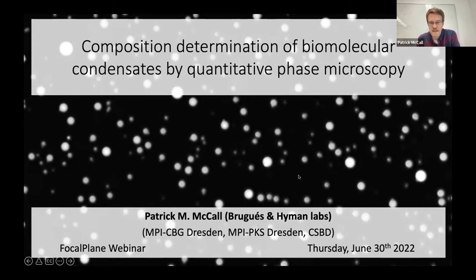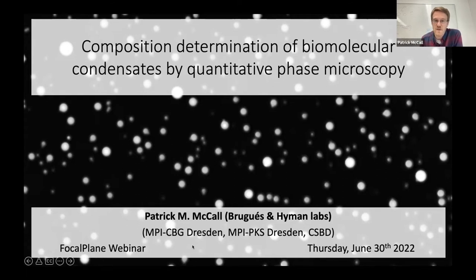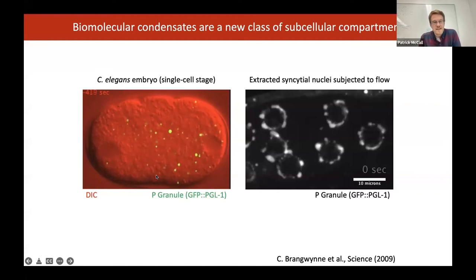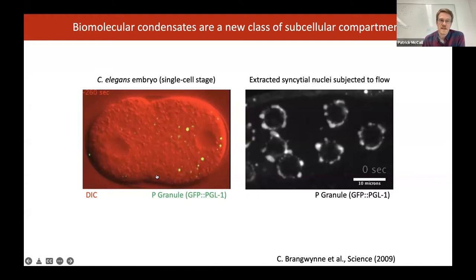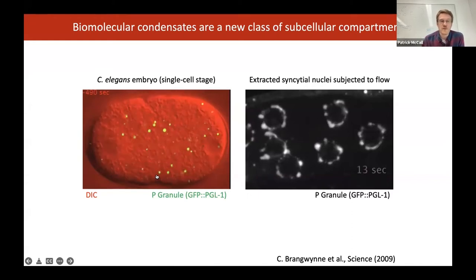To get into what that is — the questions I care about — I'm going to talk about composition determination of biomolecular condensates with quantitative phase microscopy. Over the last decade or so, there are these internal structures common to many different cells that have become termed biomolecular condensates. Many of them have been around for a long time — we've known they've existed for decades.